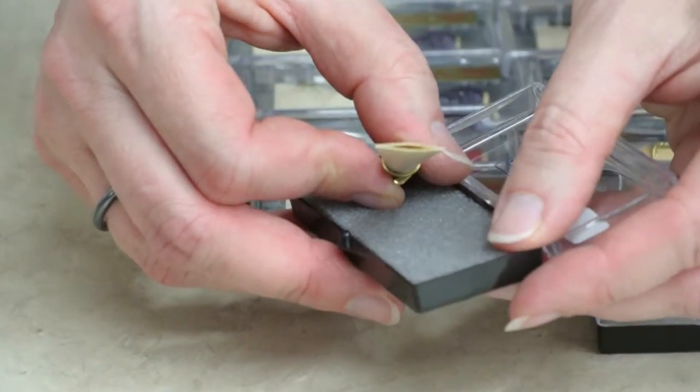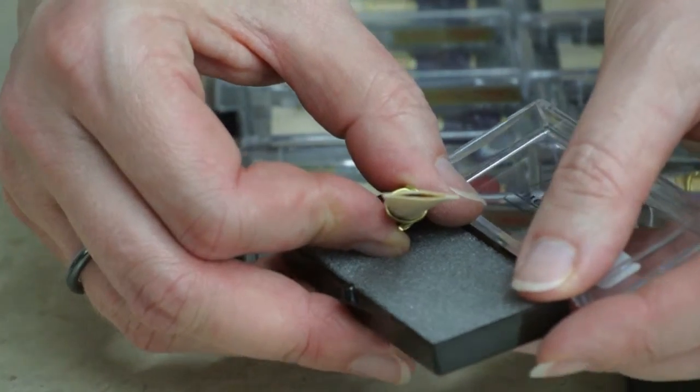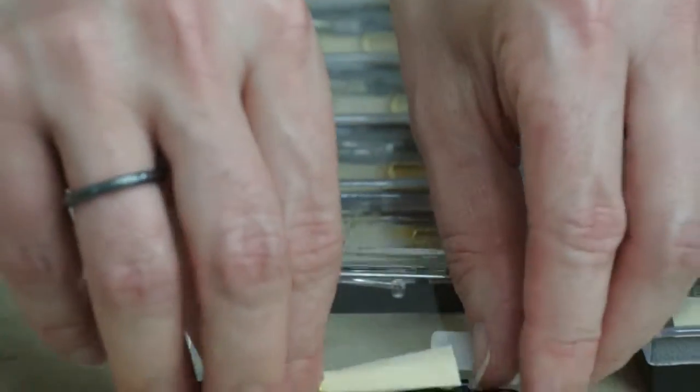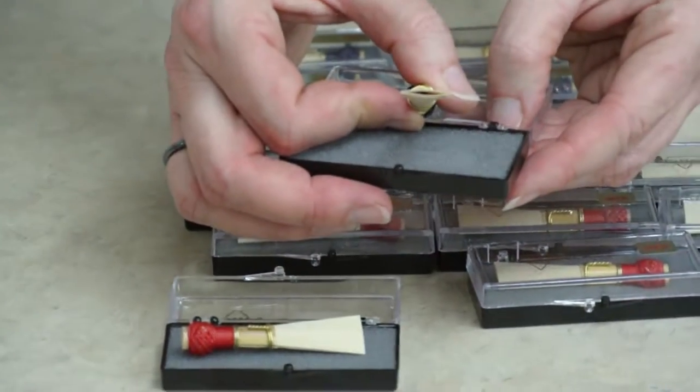An example of a good tip opening. Quite even. Not shaped like a football. And here's the same one. An artist reed. Pretty even.